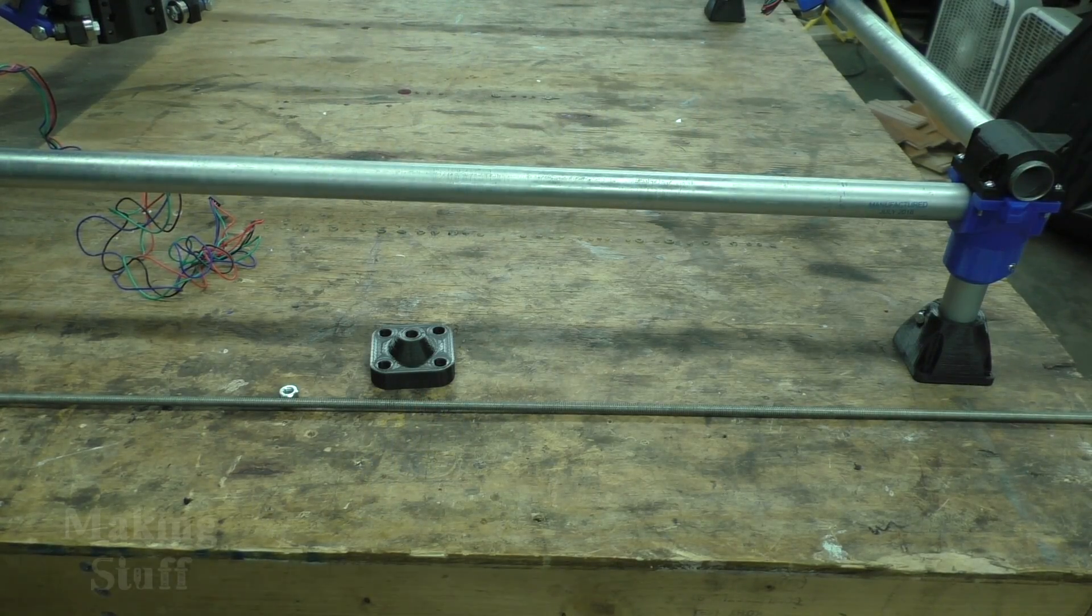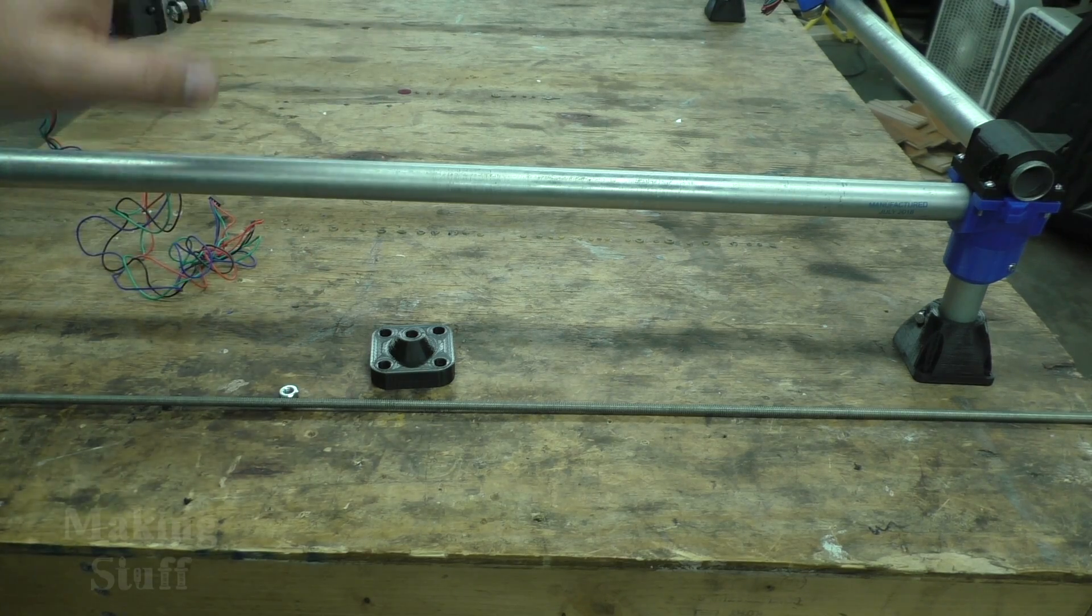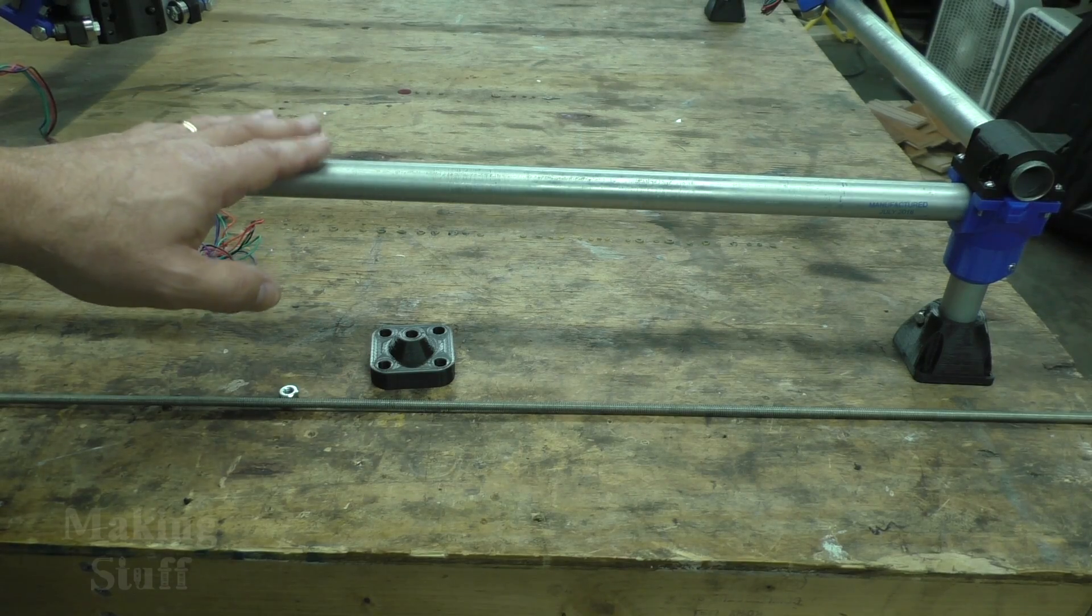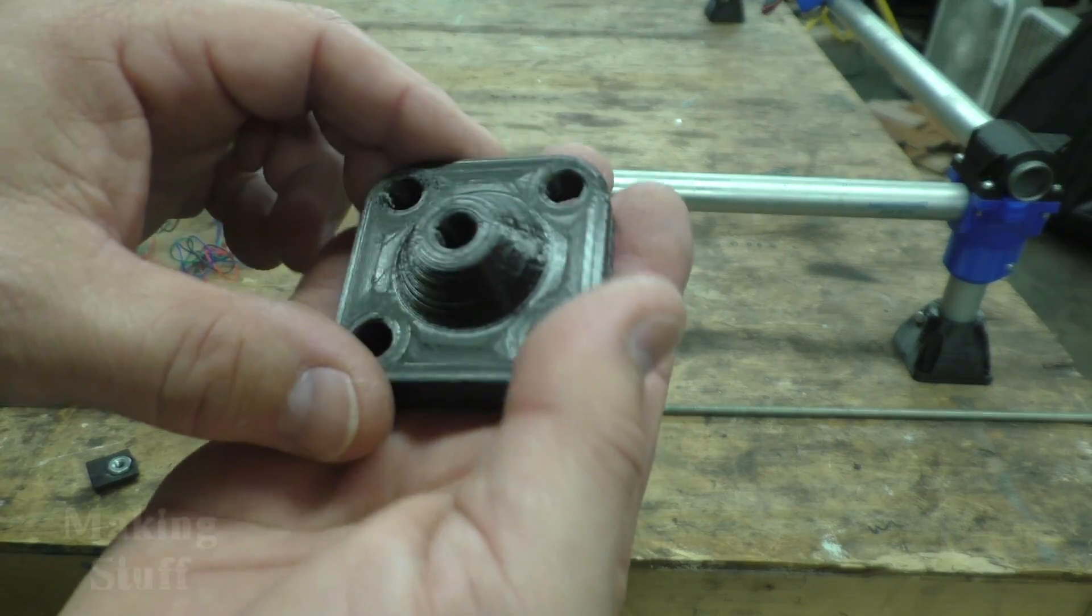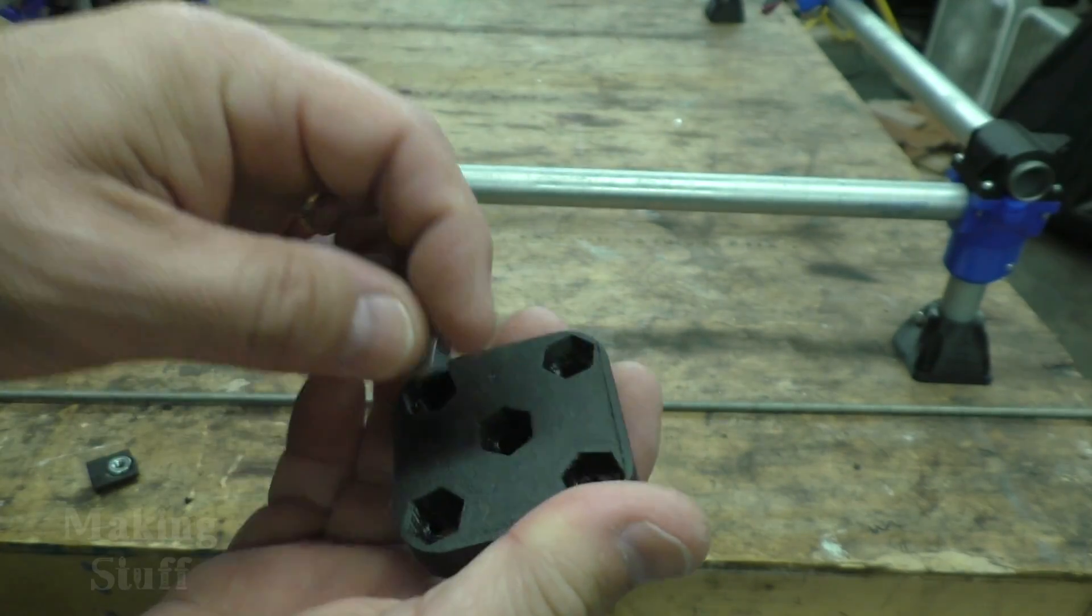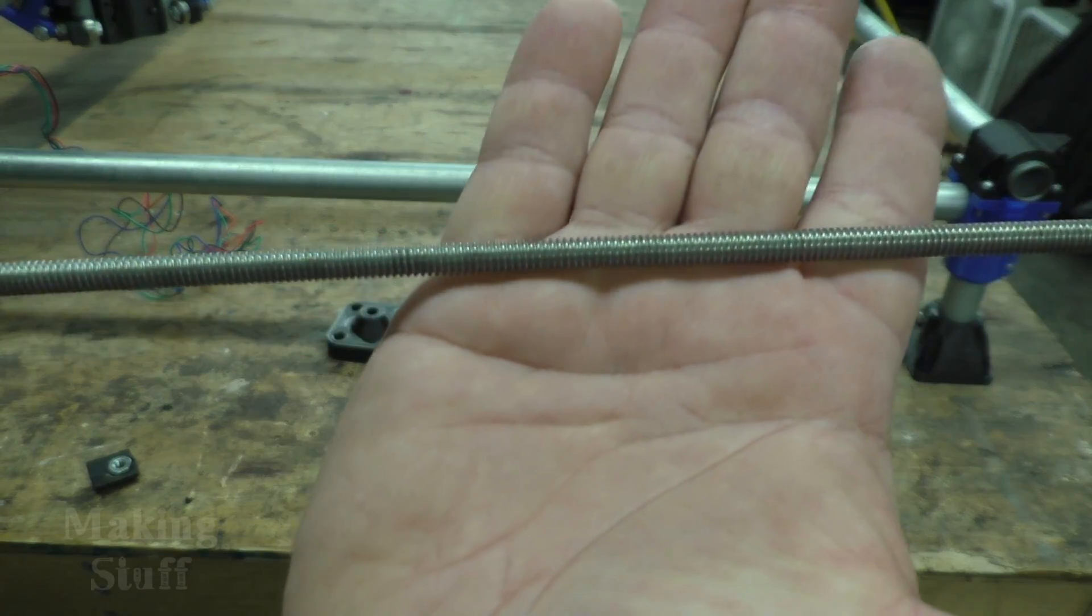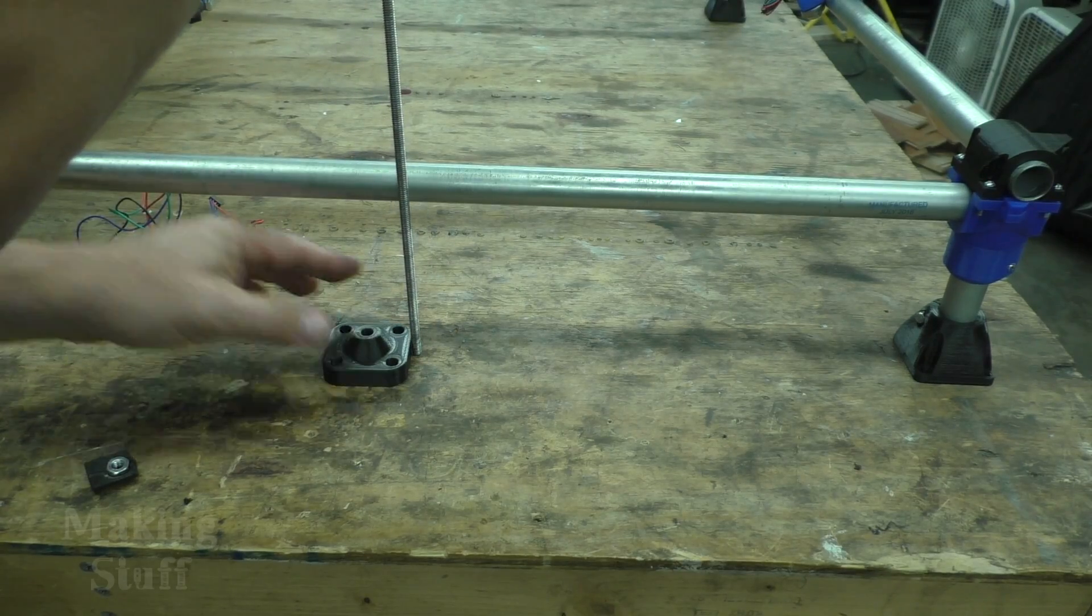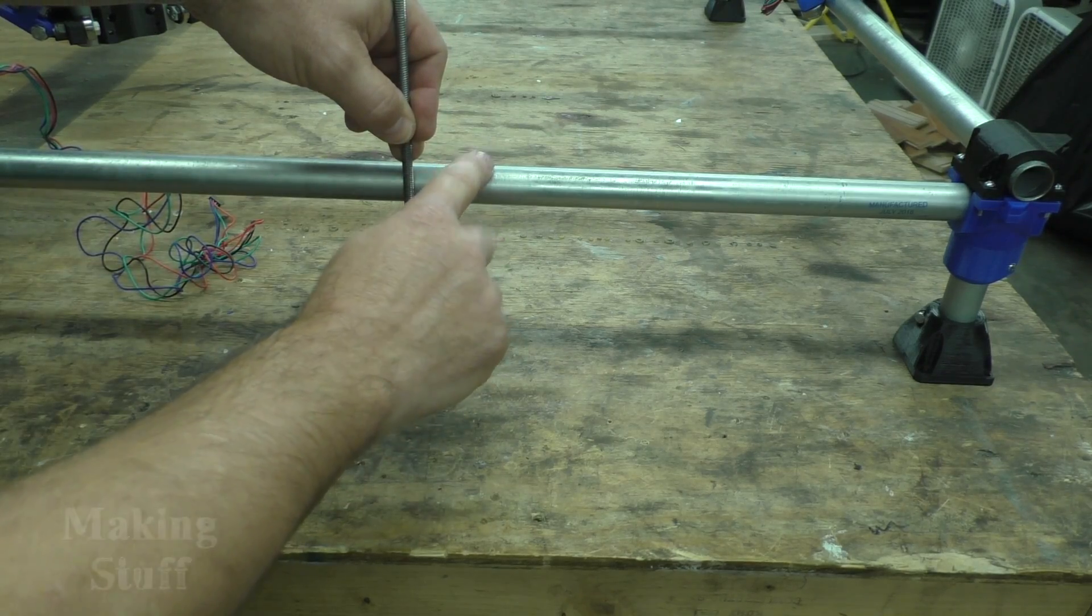I decided to look on Thingiverse before I spent the time to draw up my own solution to this problem, and sure enough there's several supports that you can download and print yourself. The one I like the best is this one and I will put a link to it in the description. It's just a support with a hex hole on the back where you can just drop a nut in there, and then you take a piece of all thread or threaded rod and cut it to the length that you need so that it will come up to a little bit more than half the height of the conduit.